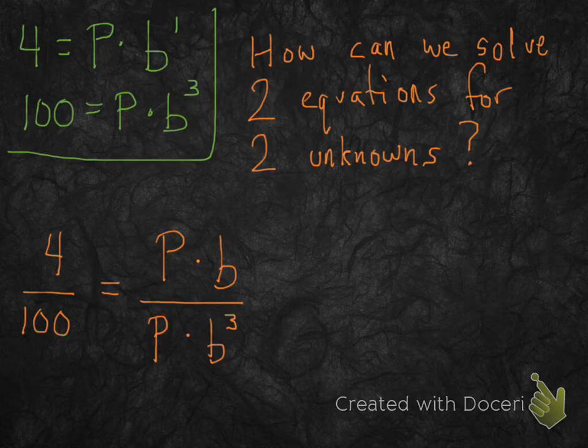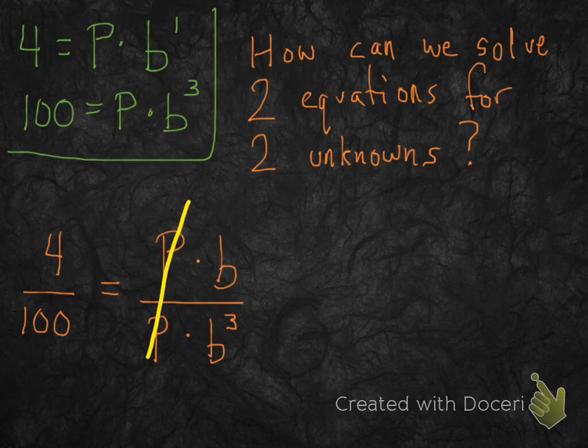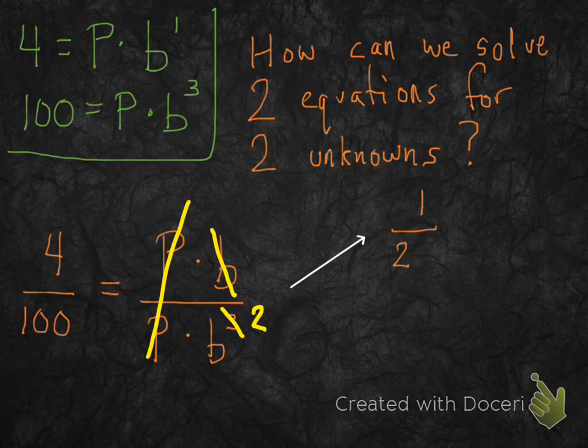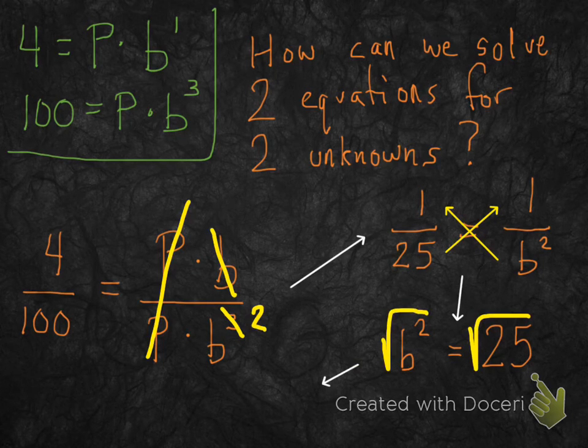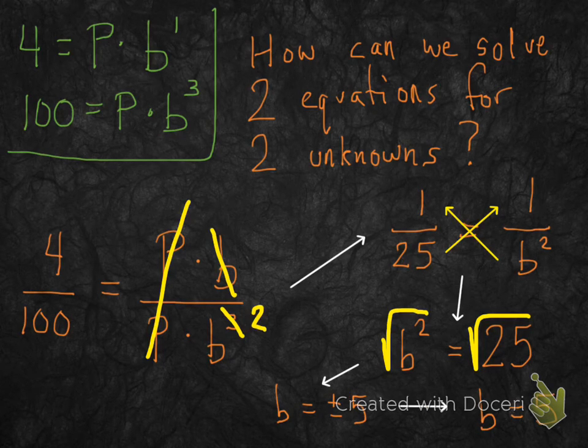Now we're going to solve for b. The reason we're going to solve for b is because the p's cancel out. Do a little bit of algebra. 4 divided by 100 is 1 over 25, and then you get that equals 1 over b squared, because everything else canceled. Now cross multiply. Take square root, and you'll find that b is either positive or negative 5. But if you remember from the very first slide, the base b can never be a negative number. So b has to be equal to 5.